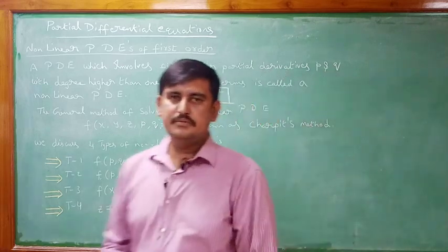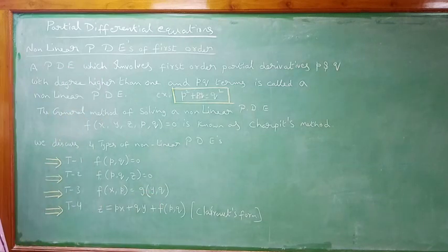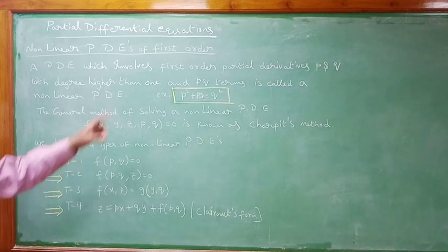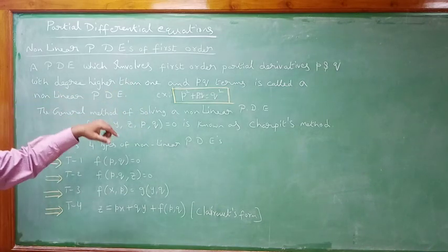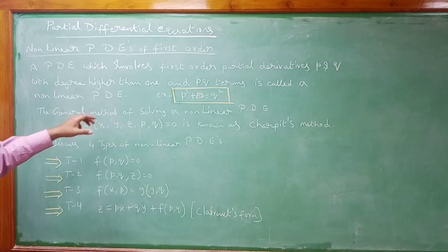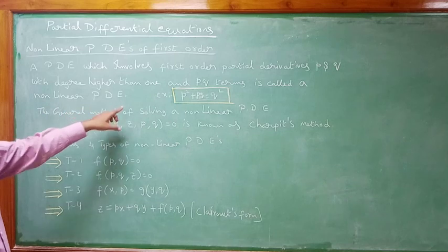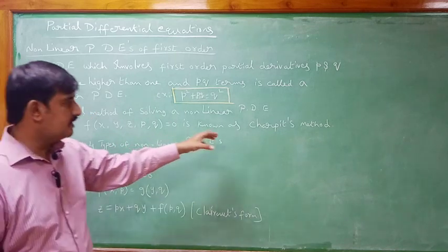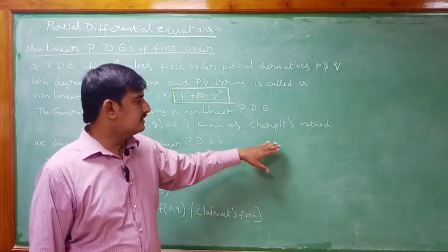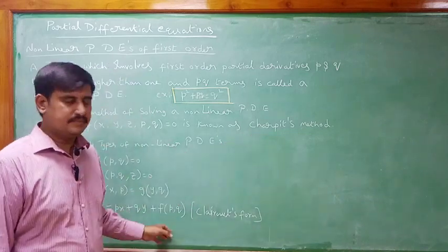These are the four types we are going to discuss today. The definition of nonlinear PDE: a PDE which involves first order partial derivatives P and Q with degree higher than one, and PQ terms. The method is Charpit's method, which is very important and will come for 10 marks directly. We will discuss it after these four types.